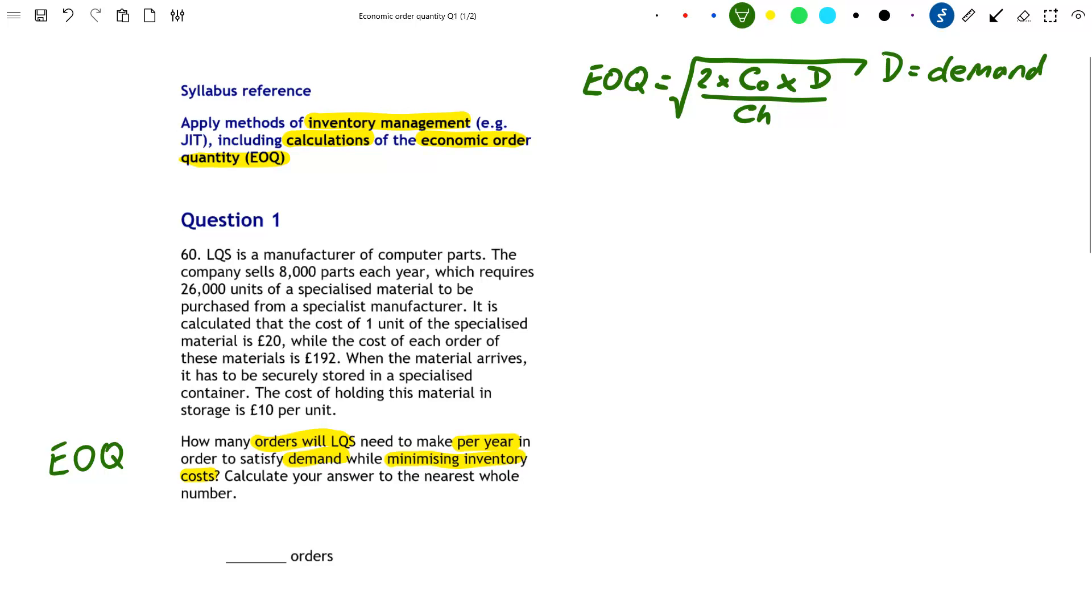CO is the cost of placing one order. So think of your postage costs when you pay for something online. That is the cost of ordering one unit that is independent of the purchase cost.